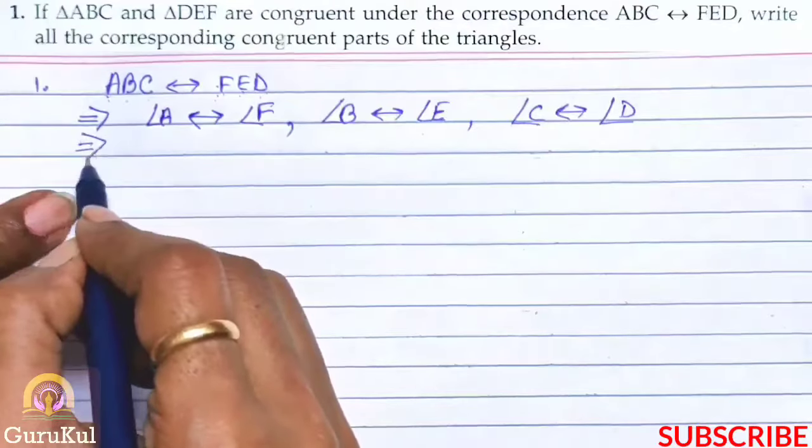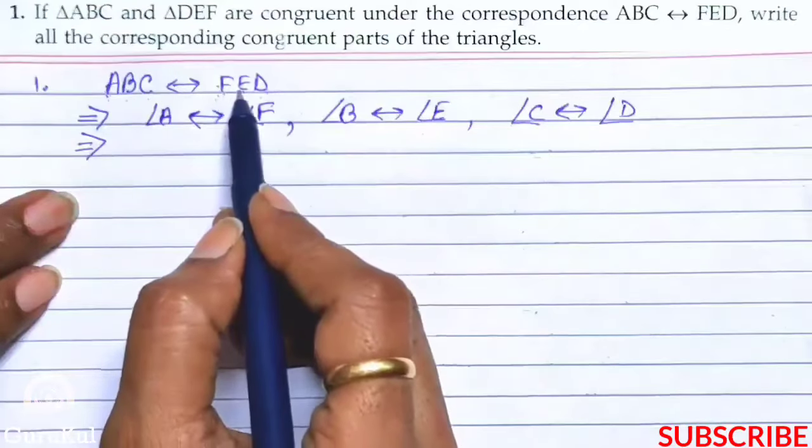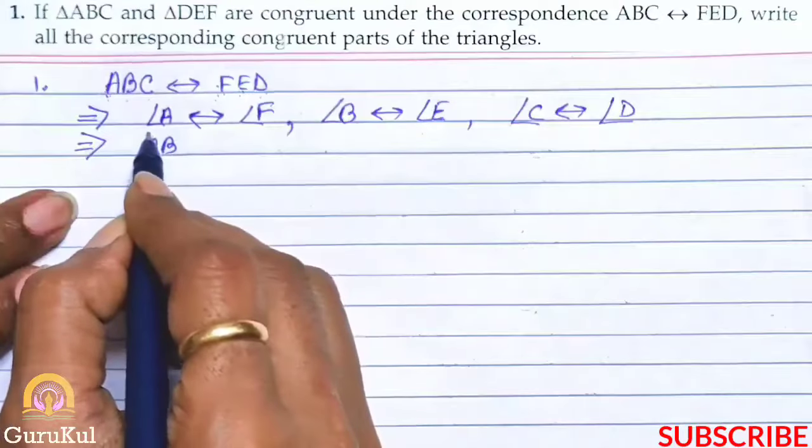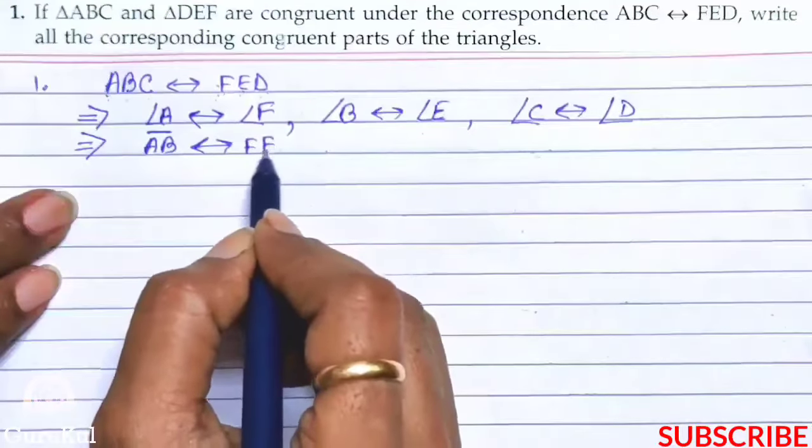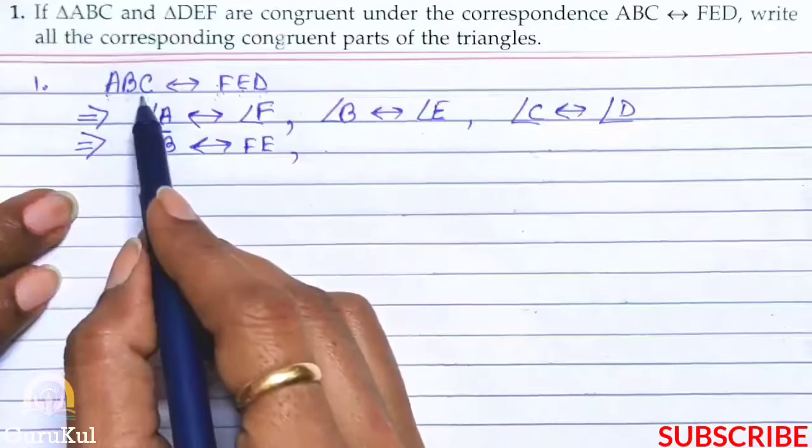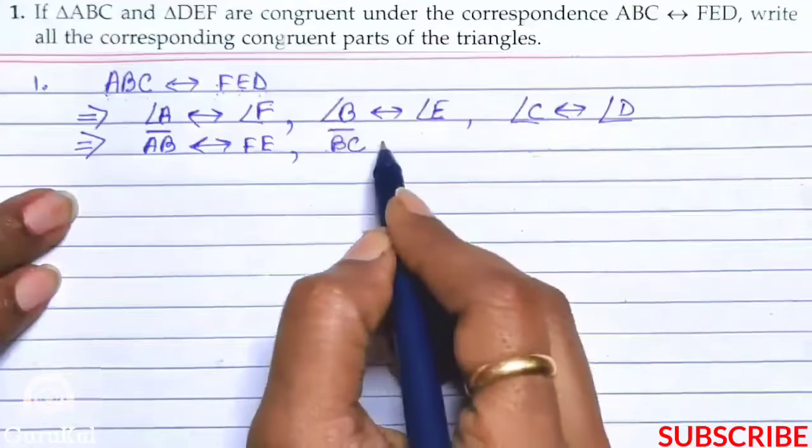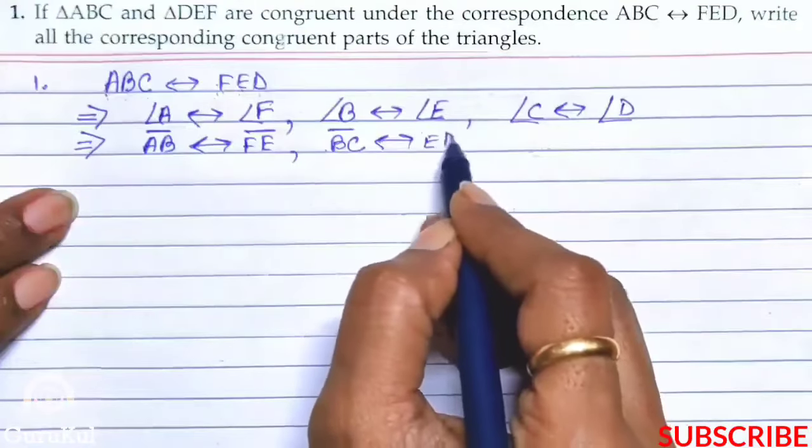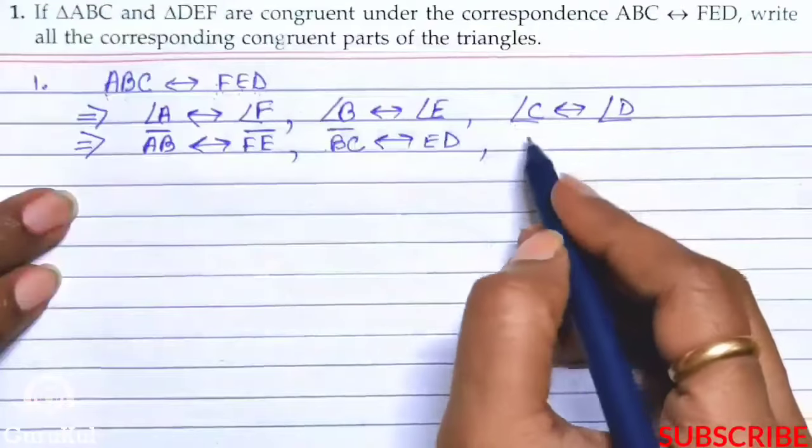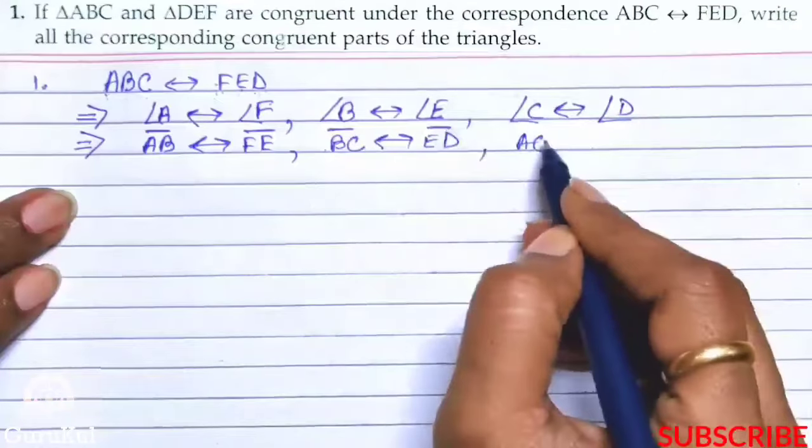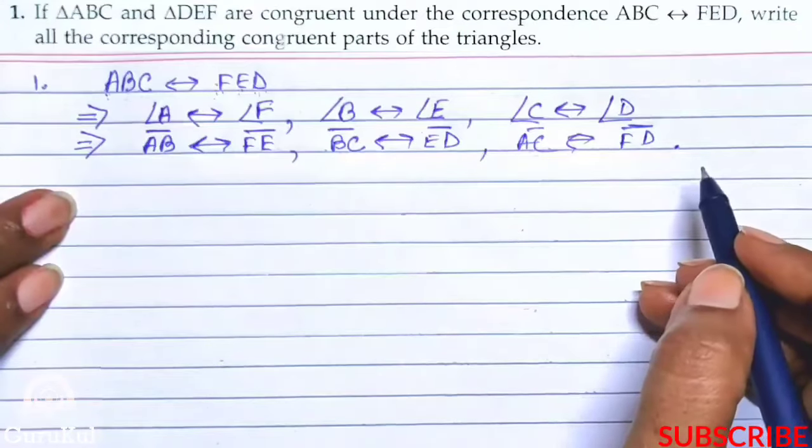Now we will talk about sides. So in sides, look, AB is correspondence to FE. So AB, since it is a line segment, we use this symbol. AB is correspondence to FE. Now we will take BC, so BC is correspondence to ED. Now third we will take AC and FD, so AC is correspondence to FD. So this is how we have to solve this sum.